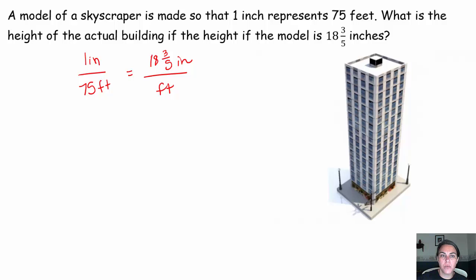I was just looking and I'd say one times what is 18 and three-fifths? Well, one times 18 and three-fifths. So if I'm going to multiply the numerator by 18 and three-fifths, I'm going to multiply the denominator by 18 and three-fifths. And that will give me how many feet high my building is.